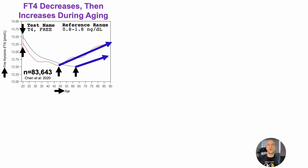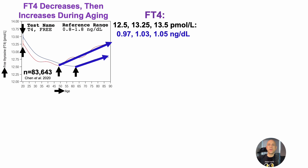The reference range for free T4 — this is the Quest Diagnostics reference range — is 0.8 to 1.8 nanograms per deciliter. Comparing with the plot data requires a unit conversion from picomolar to nanograms per deciliter. Converting the range of 12.5 to 13.5 picomolar gives us 0.97 to 1.05 nanograms per deciliter, which falls within the reference range but would miss both the age-related decrease and the age-related increase.